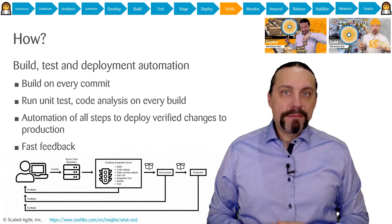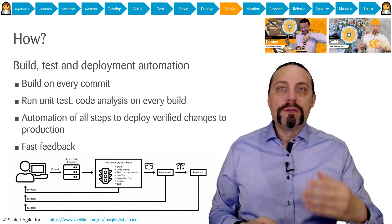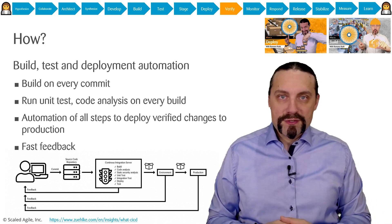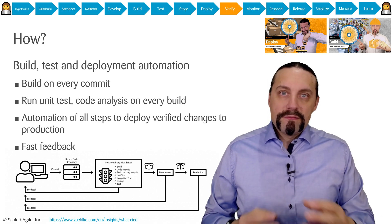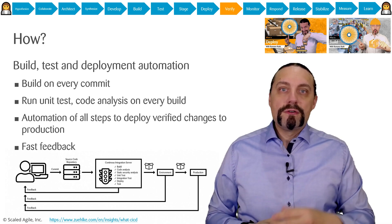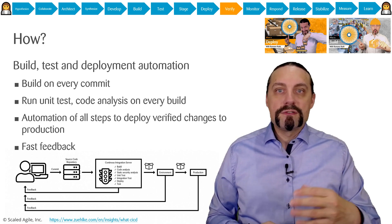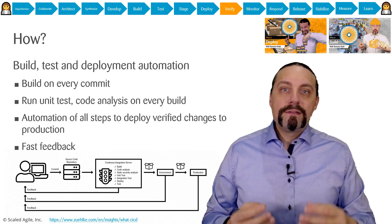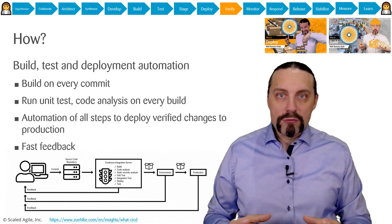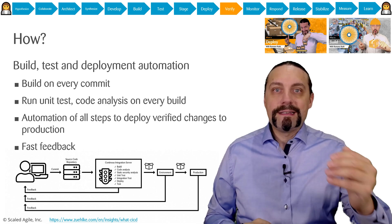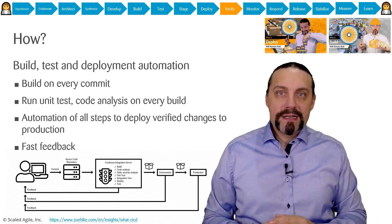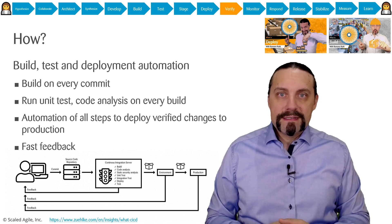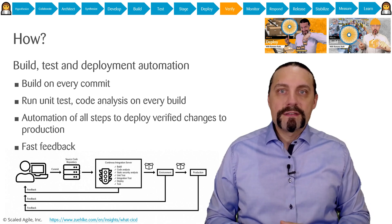With the build, test, and deployment automation, we are able to do a build on every commit that developers are doing. In the build, we are going to execute all of the unit tests. We are going to check with the code analysis the code but also the security. And of course, we are building the whole package so that we can automatically deploy this package into the staging environment but also into the production environment. What is important is that we can give the developers a fast feedback.